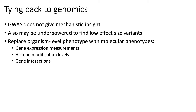In this lecture we didn't really have the time to tie what we were talking about back to genomics. What I want to say is that GWAS studies on their own do not give mechanistic insight. They give you a list of SNPs pointing to regions of the genome where there's probably some causal variant driving phenotypic variation in complex traits or diseases, but they don't tell you how — they just tell you that a SNP in the region drives phenotypic variation.